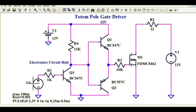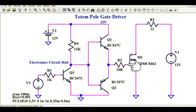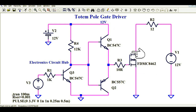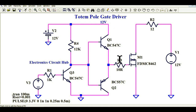Since your input voltage is 3.3 volts coming from the microcontroller, but you want to drive your power MOSFET M1 with 10 or 12 volts. In order to do this, you have to increase the gate voltage. You will increase the gate voltage by using some driving circuitry or gate driver. So here I have used the totem pole configuration.